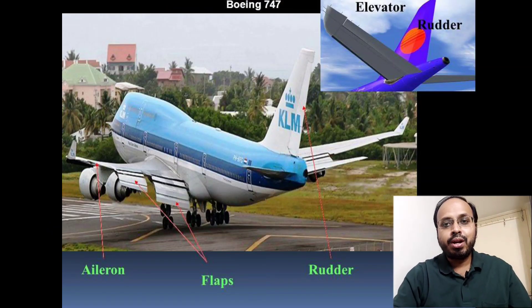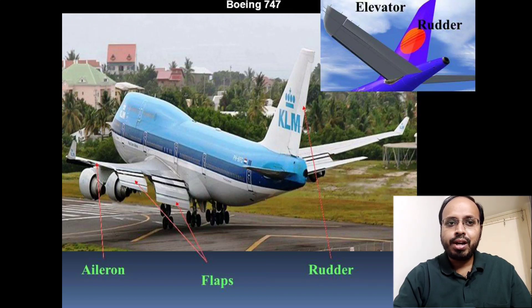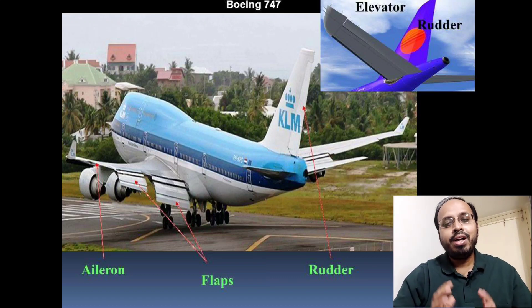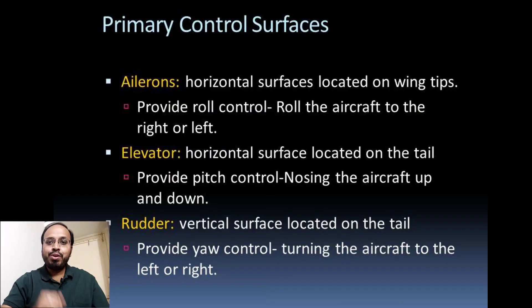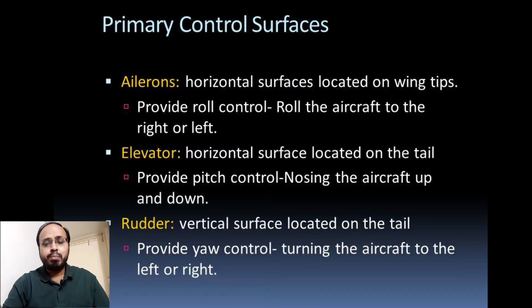Now we are going to see the primary control surfaces of the aircraft — only an overview, not in great detail. Looking at the figure, there are three main control surfaces called primary control surfaces that provide stability and control during operation.